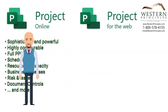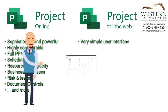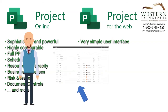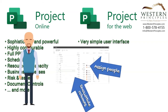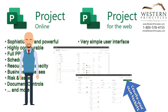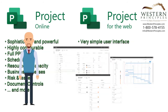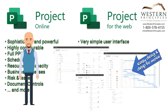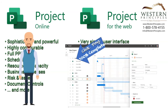Project for the Web is Microsoft's latest work management solution. Microsoft has introduced a simpler user interface for creating a schedule. It has three main views: the grid, where you can easily enter tasks; the board, where you can organize tasks; and the timeline, which is a Gantt view. In Project for the Web, you can add and organize activities, assign people to each task, and also status the tasks.